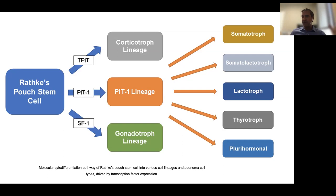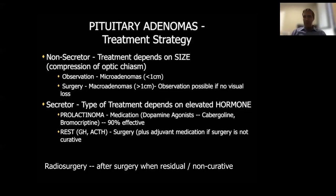The Pit-1 lineage tumors are the most invasive to the cavernous sinus in particular — this is new research we are coming up with. Then we have the SF-1 lineage, which is the most benign of all these categories, mostly the gonadotroph lineage.